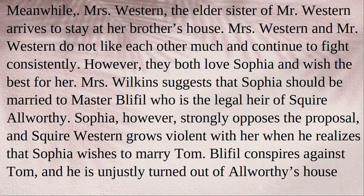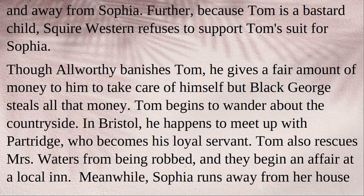Meanwhile, Mrs. Western — the elder sister of Mr. Western — arrives to stay at her brother's house. The two do not like each other and fight consistently, though they both love Sophia and wish the best for her. Mrs. Wilkins suggests Sophia should be married to Master Blifil, the legal heir of Squire Allworthy. Sophia strongly opposes this proposal, and Squire Western grows violent when he realizes she wishes to marry Tom. Blifil conspires against Tom, who is unjustly turned out of Allworthy's house and away from Sophia. Because Tom is a bastard child, Squire Western refuses to support his suit for Sophia. Though Allworthy banishes Tom, he gives him a fair sum of money — but Black George steals it all. Tom begins to wander about the countryside.